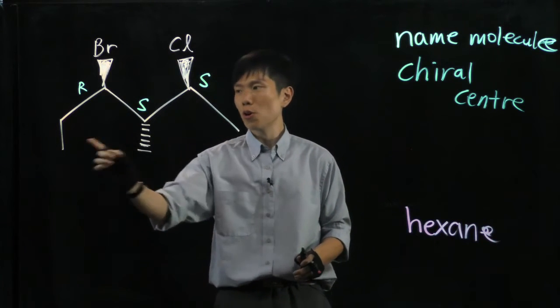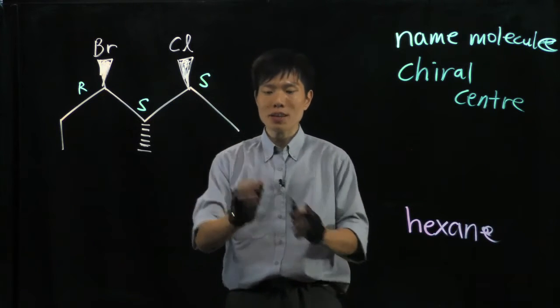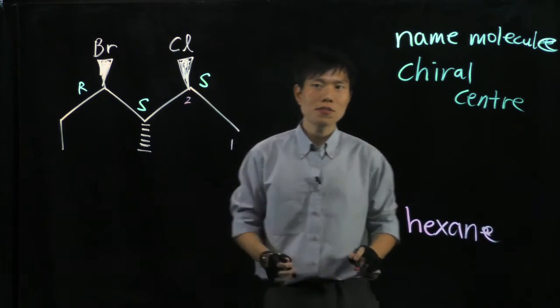Which way do we start? 1, 2, or is it 1, 2, 3? That way, because here we have the lower number of two for the first branching.